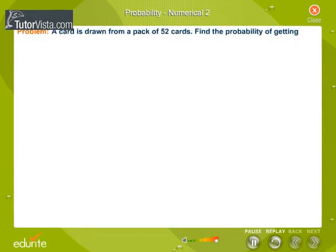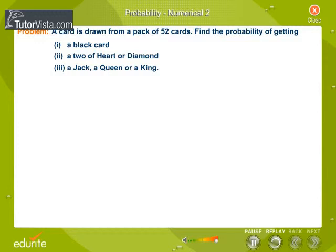A card is drawn from a pack of 52 cards. Find the probability of getting: (i) a black card, (ii) a two of heart or diamond, (iii) a jack, a queen or a king.